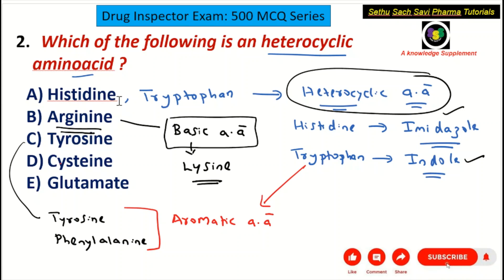Histidine and tryptophan are heterocyclic amino acids. Arginine and lysine are basic amino acids. So here the question was: which of the following is a heterocyclic amino acid? The correct answer is histidine — choice A. Hope you understood this discussion. Now let's move to the third question.